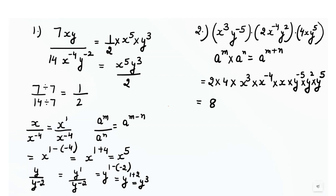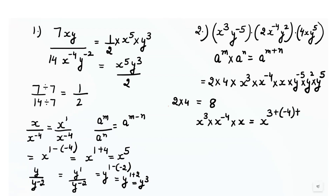First we solve the numbers: 2 times 4 is 8. Then for x: x raised to power 3 times x raised to power minus 4 times x. Using the multiplication rule, we add the powers: 3 plus minus 4 plus 1, which equals 3 minus 4 plus 1, giving x raised to power 0. Using the rule a raised to power 0 equals 1, x raised to power 0 equals 1.